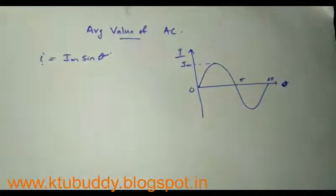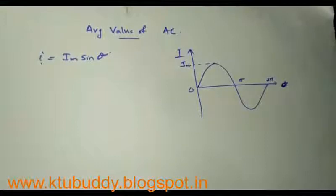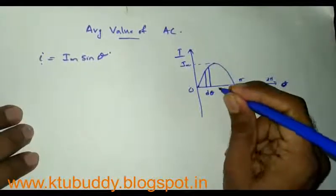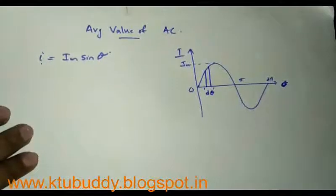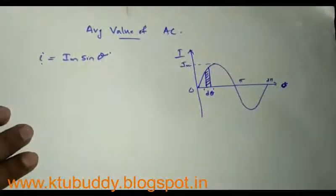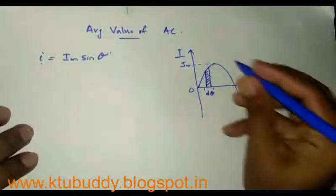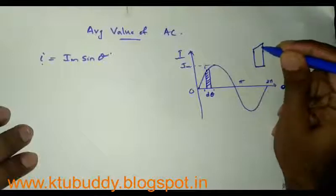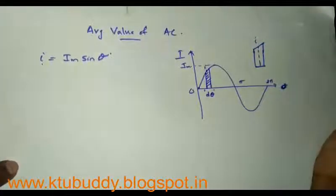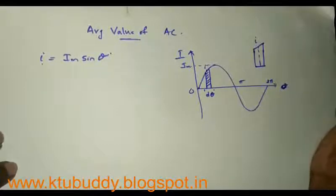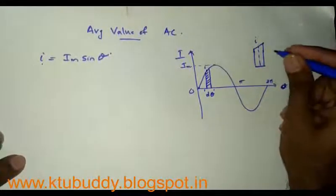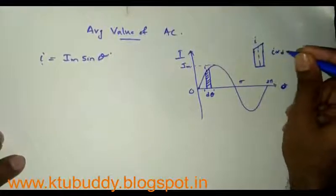To derive the average value, I consider a small strip of thickness dθ across the waveform. I am assuming that I is the instantaneous value at the midpoint of this small section. If dθ is very small and tends to zero, then I will be a straight line, and I can consider this small section as a rectangle. The area of this section is given by I into dθ.